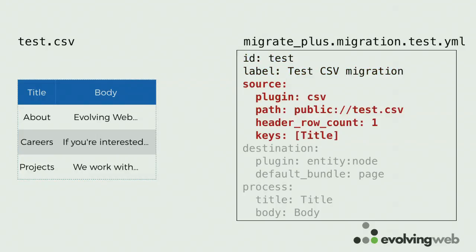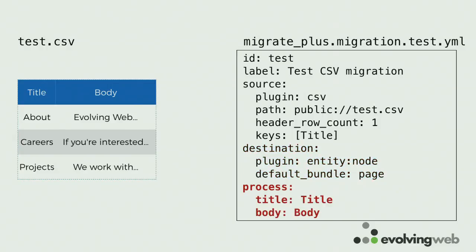It defines a source. A source says where the data comes from. This says the type of the source — we call it a plugin — is a CSV. The data's coming from CSV. The CSV file lives at a certain path, it has a header row, and then we define how to uniquely identify each row to make sure we don't accidentally migrate something twice. We say the title is unique in this case — though it's pretty normal on a Drupal site to have multiple pages with the same title, in which case you'll have to choose something else as your unique identifier. You have a destination that says where the data will go in Drupal — these are going to become nodes of type page. And then you have the process, which defines how you turn data from the source into data that goes to the destination: the node title comes from the title column and the node body comes from the body column.